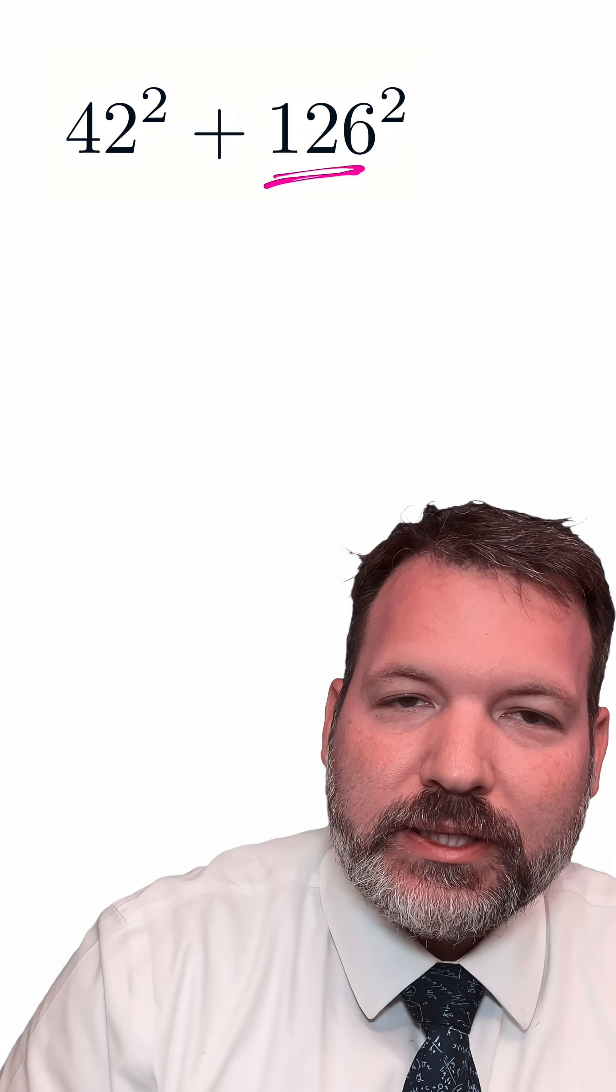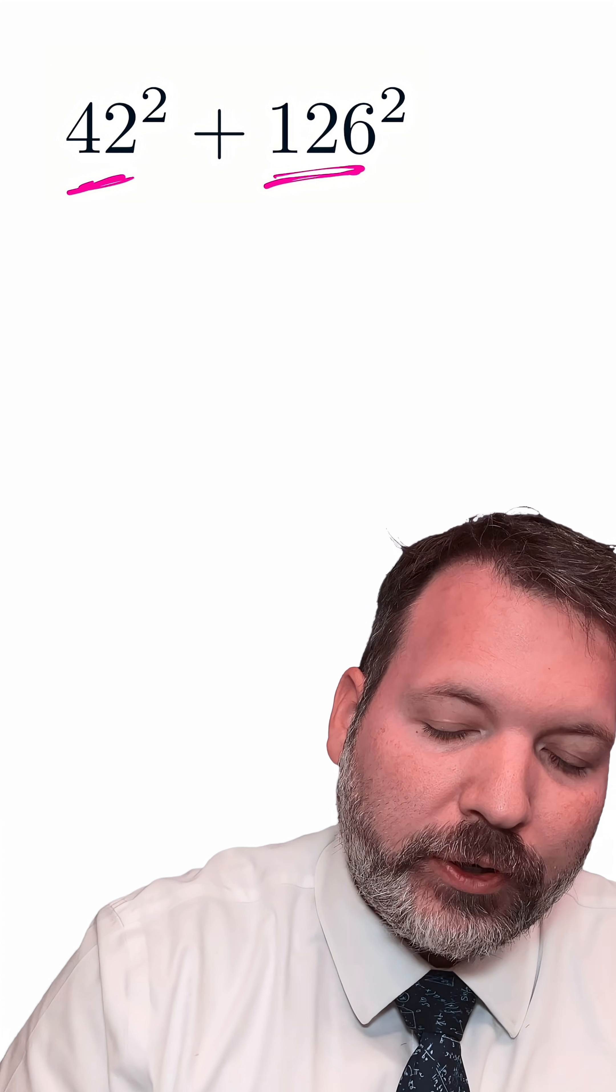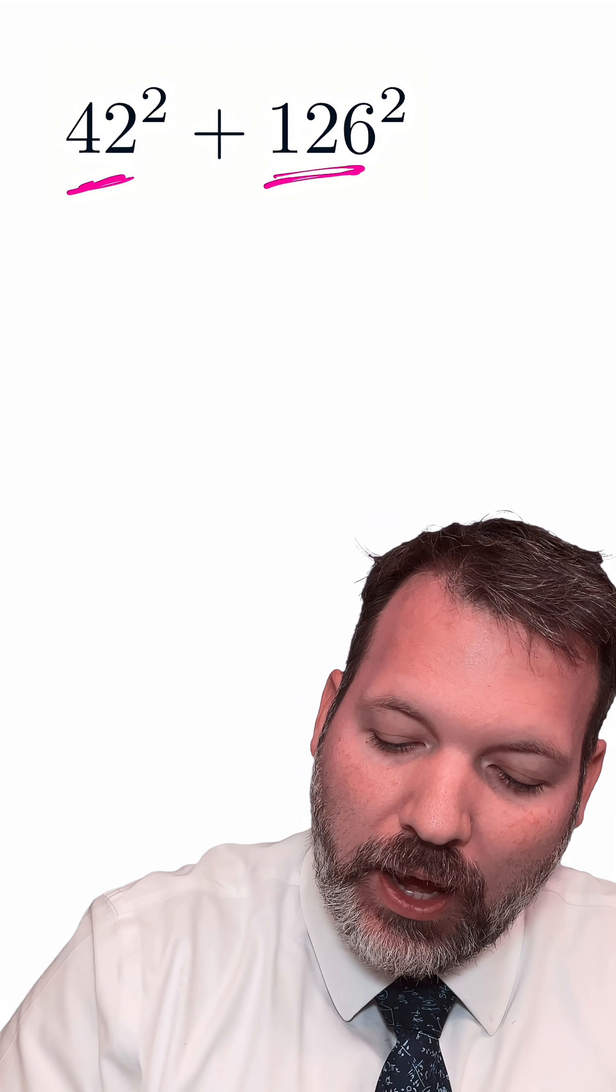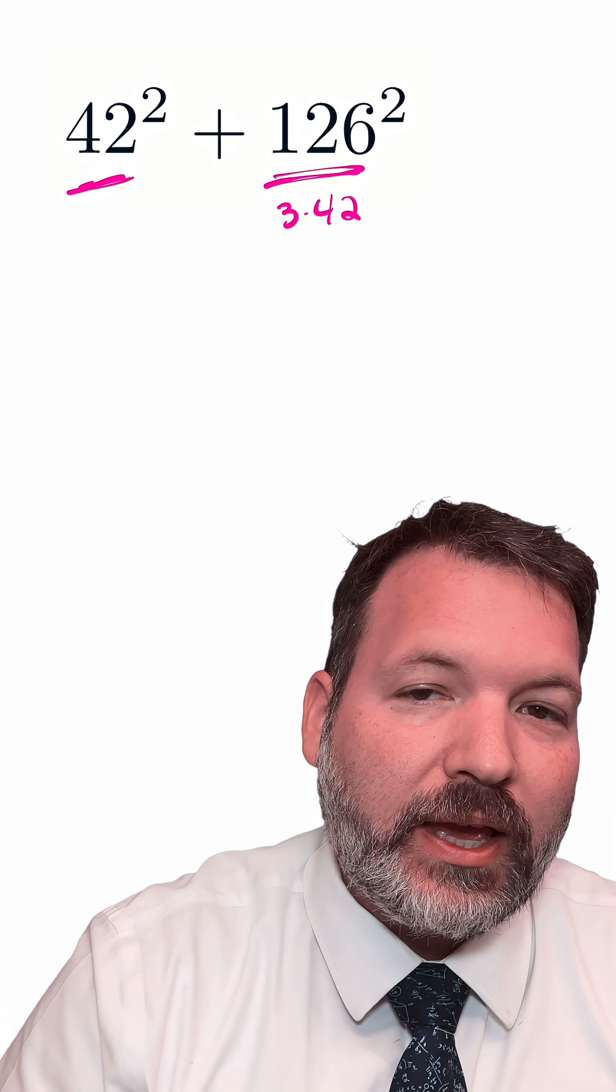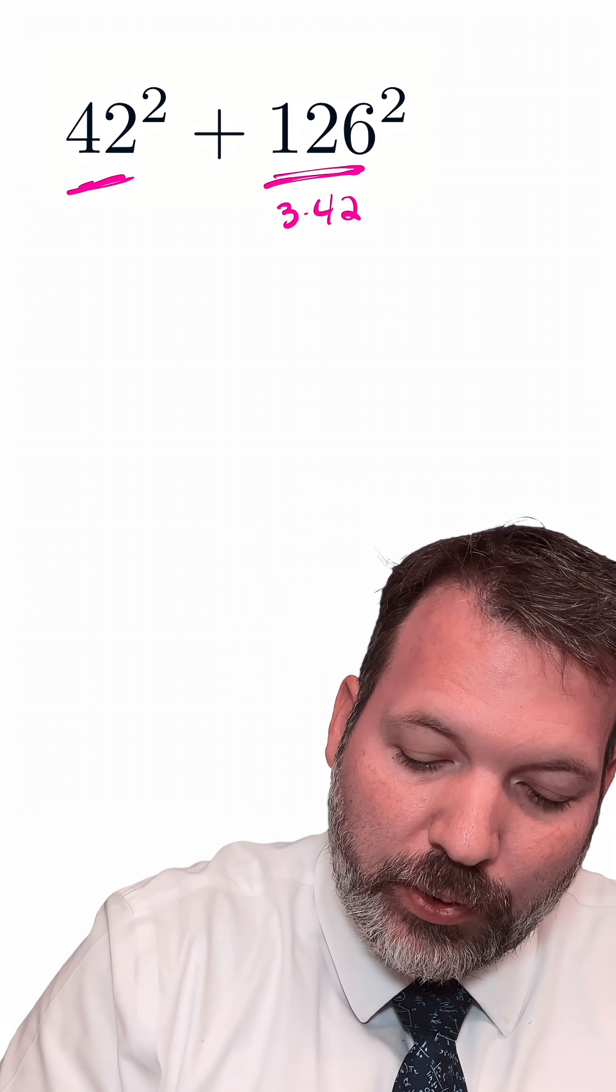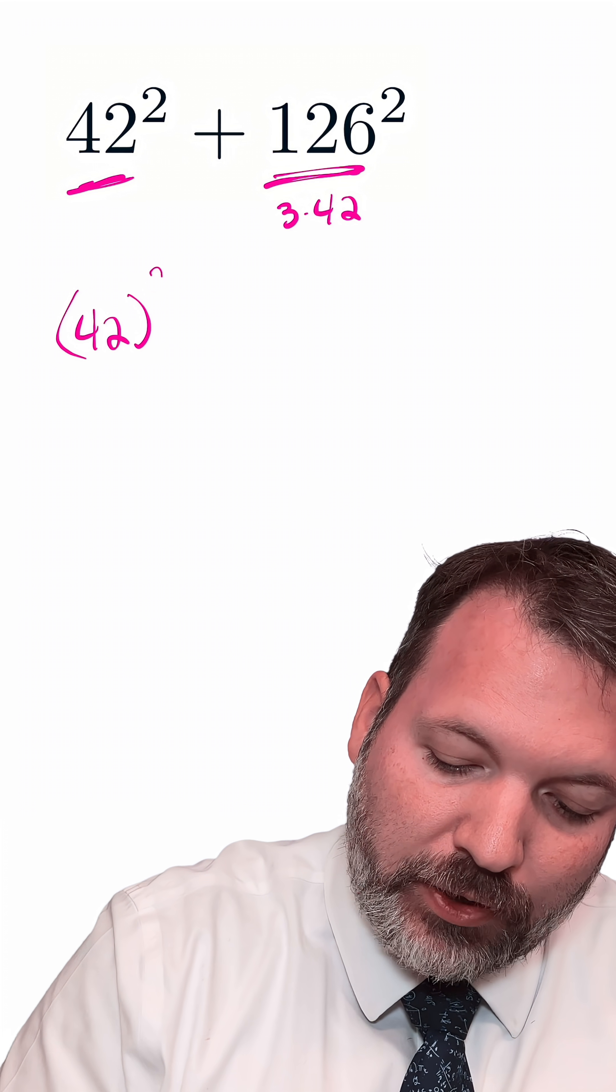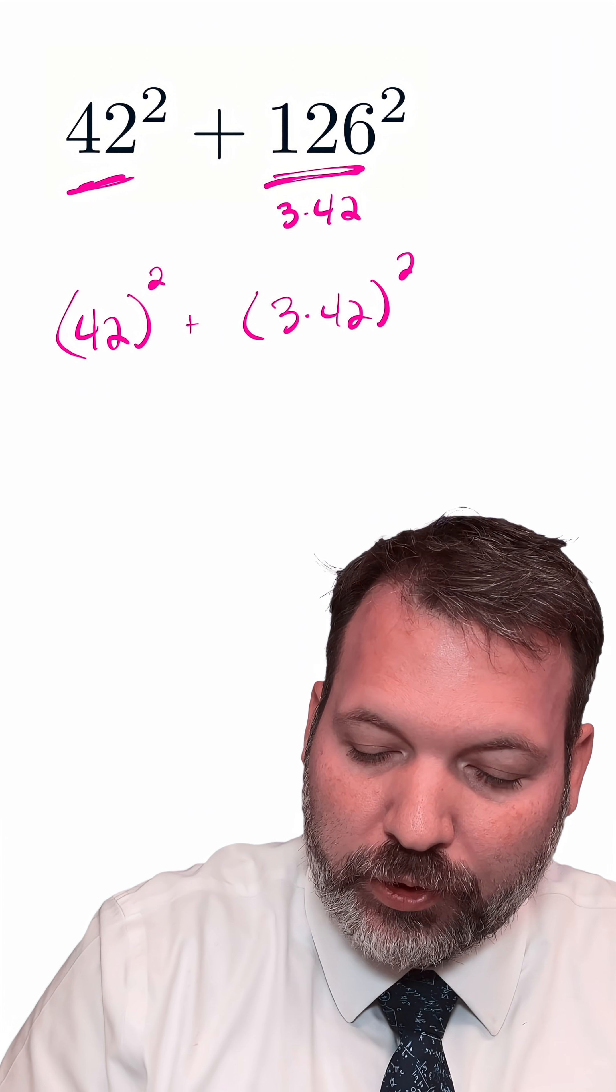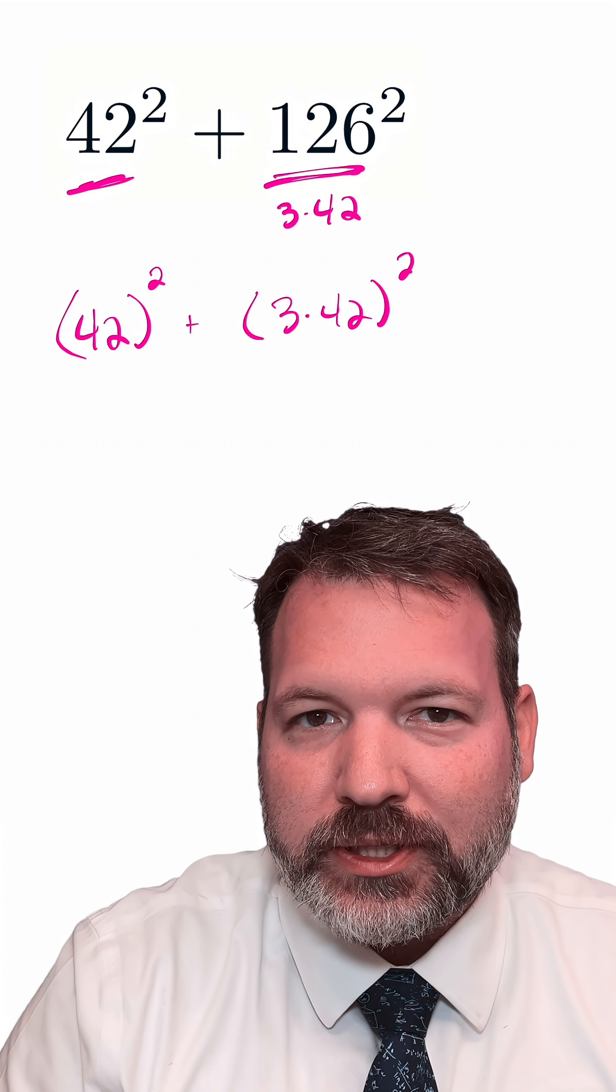What we want to notice instead is that there's actually a connection between 42 and 126. 126 is the same thing as 3 times 42. So in fact, another way to write this is 42² + 3 × 42², and then something interesting happens.